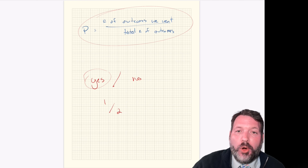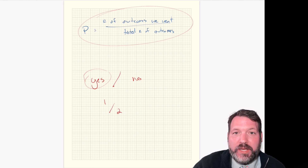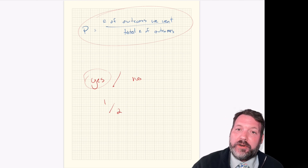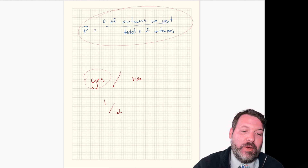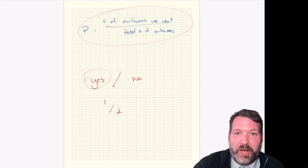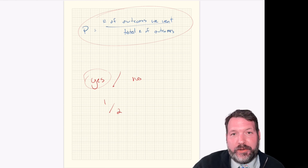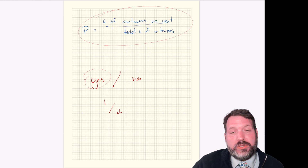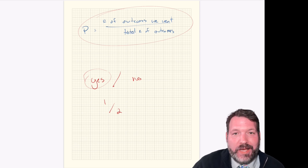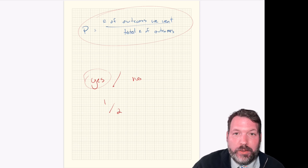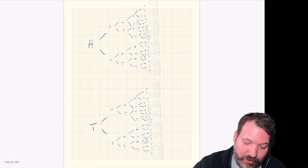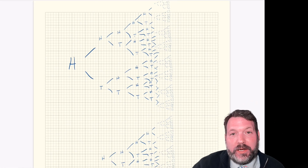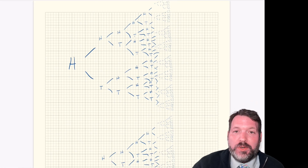And that is exactly the problem with this definition of probability. It only works if every outcome is equally likely. If outcomes are not equally likely, we can't simply count them up and put them in a fraction. With true coin flips, we can usually assume heads and tails are equally likely.